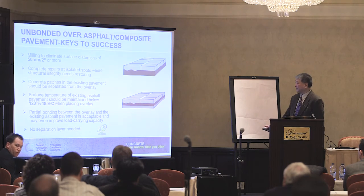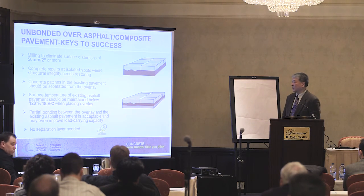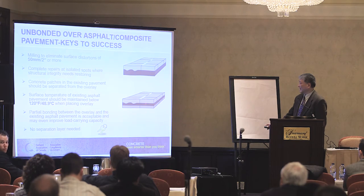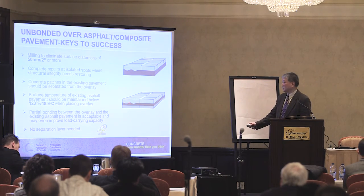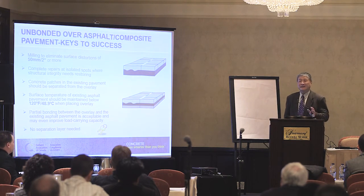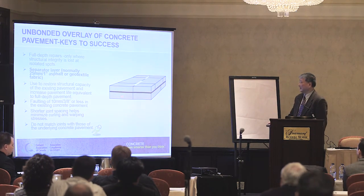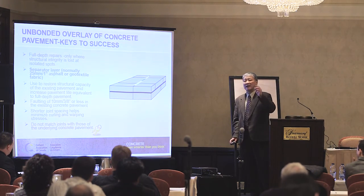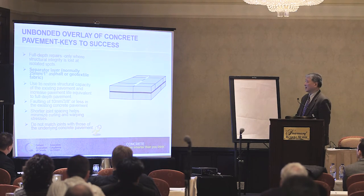Temperature is again a concern for unbonded overlay on composite pavement — the temperature of the asphalt will cause elevated concrete temperature and flash setting. No separation layer is required when placing unbonded concrete directly onto asphalt — even if the asphalt bonds a little to the concrete, that's no problem. However, when doing unbonded concrete overlay on existing concrete pavement, you must provide a separation layer, as the next two case studies will demonstrate.